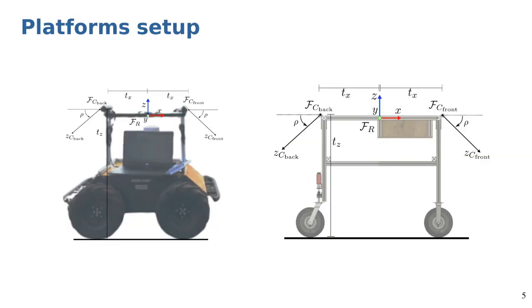We consider a mobile robot platform capable of seamlessly moving in forward and backward directions. Our platforms are equipped with two cameras symmetrically in front and back which are tilted toward the ground indicated by parameter rho.